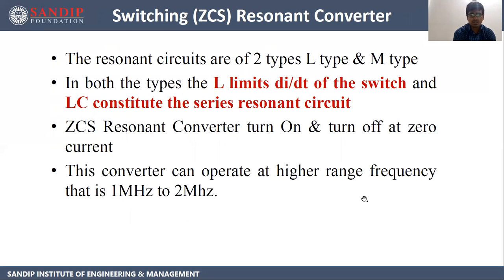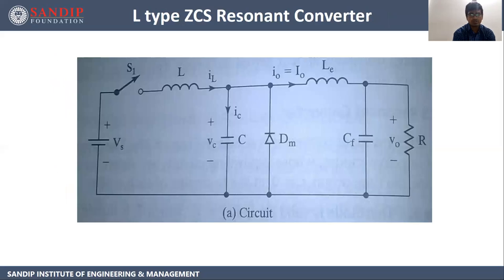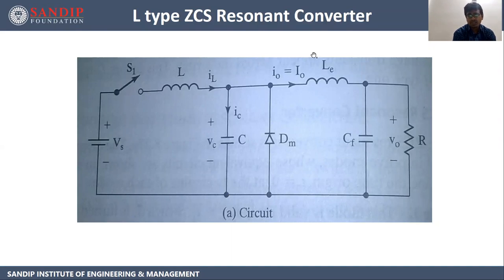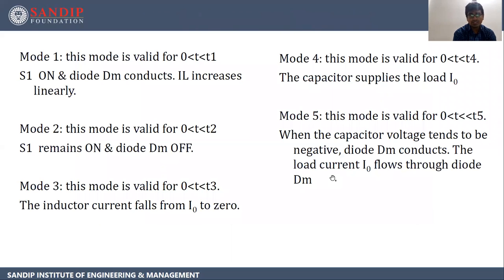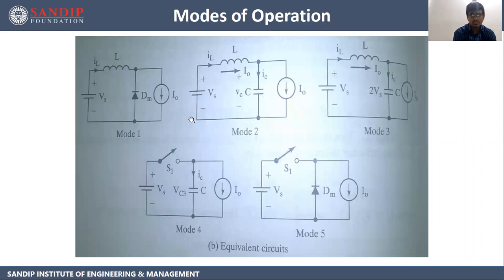ZCS resonant converters turn on and off at zero current. This converter can operate at high frequencies, that is 1 MHz to 2 MHz. Here we have the L-type ZCS resonant converter using an LC resonant circuit. LE and CF are filter components and DM is the freewheeling diode. This is the complete circuit. We will see the operation in each mode.